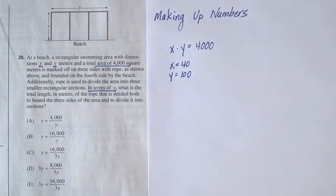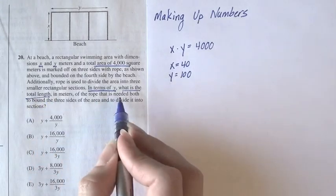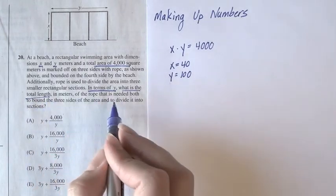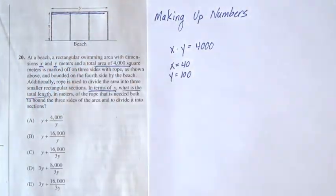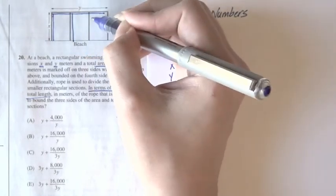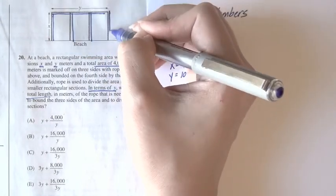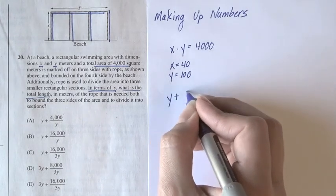So now, let's answer the question being asked. What is the total length of the rope that is needed to bound the three sides of the area and divide it into sections? Well, we need this distance, which is y, and then one, two, three, four x's. So, the total amount is y plus 4x.